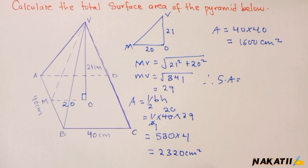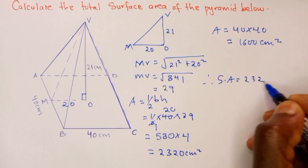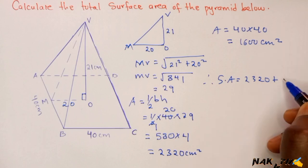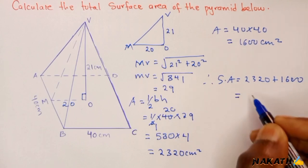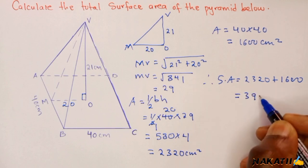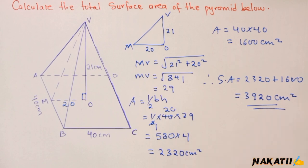And therefore the surface area of this pyramid will be the area of the four triangular faces, which is 2320, plus the area of the square base, which is 1600. If you add these two, you get 3920 centimeters squared.